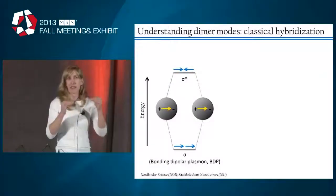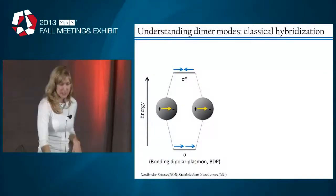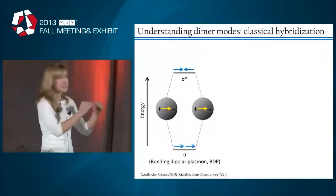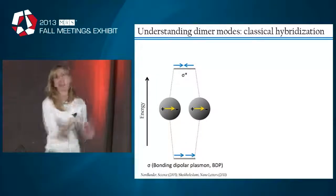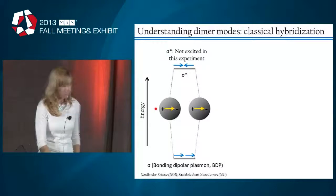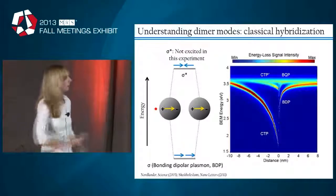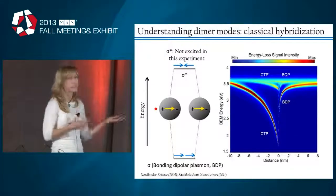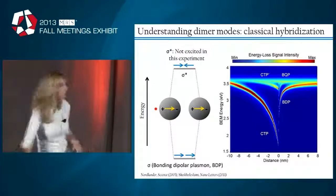And as the two particles come together, as you might expect from, say, an inorganic chemistry class, the bonding dipolar plasmon exhibits a red shift. So we can plot theoretically what we might expect using this local model.